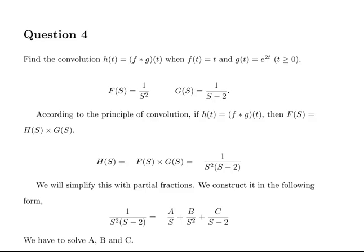This is a Laplace transform question, and specifically what we are looking for is to solve a convolution problem. We want to find the convolution h, that is the convolution of two other functions f and g. f is simply t and g is equal to e to the two times t. This is for t greater than or equal to zero, so it is a non-negative time.